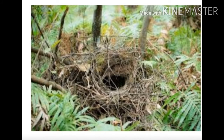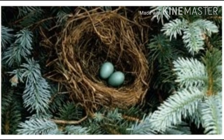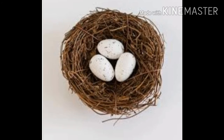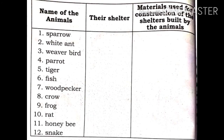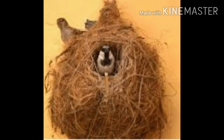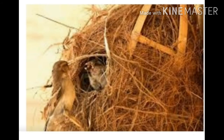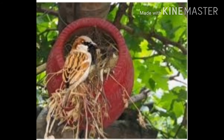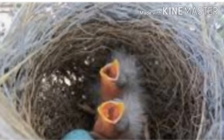Children, have you observed the living places of certain animals and birds? I will show you one chart. First observe the chart of animals and birds, their shelter, and the materials used to construct the shelters. Later you have to fill it - one by one I will explain. First one is sparrow. Sparrow is a bird, so their shelter is a nest. Sparrows live in nests and the material used for constructing the nest is dry leaves, straw, and twigs.